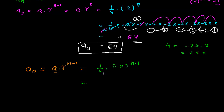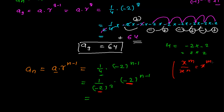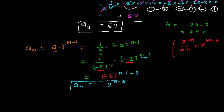So in place of 4 I can write (-2)^2, giving us 1/(-2)^2 × (-2)^(n-1). The bases are the same, so using the rule x^m / x^n = x^(m-n), this becomes (-2)^(n-1-2) = (-2)^(n-3). This is our general term for the given sequence.